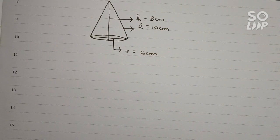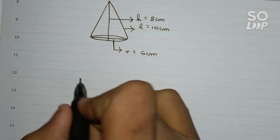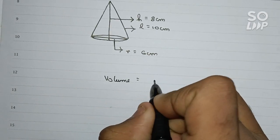So now with this information you can easily calculate the volume and the curved surface area of the cone. First write volume - the formula for the volume of a cone is 1/3 π r² h.